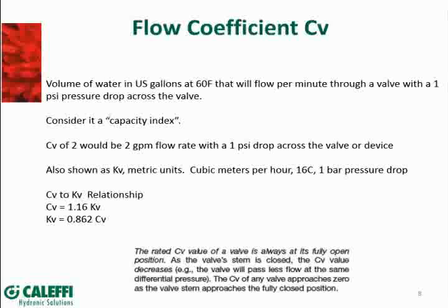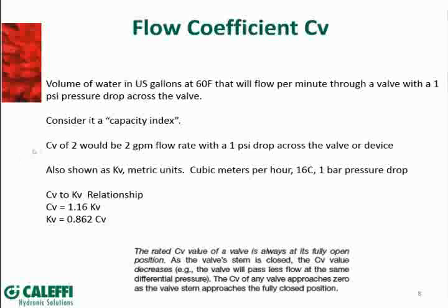I saw one analogy that considered it to be a capacity index. There are a lot of different ways that people interpret and explain this. To me that made the most amount of sense, and I think the formulas will kind of substantiate that definition. For an example, a CV of two would mean a two-gallon-per-minute flow through a valve or device would have a one PSI pressure drop across that device.